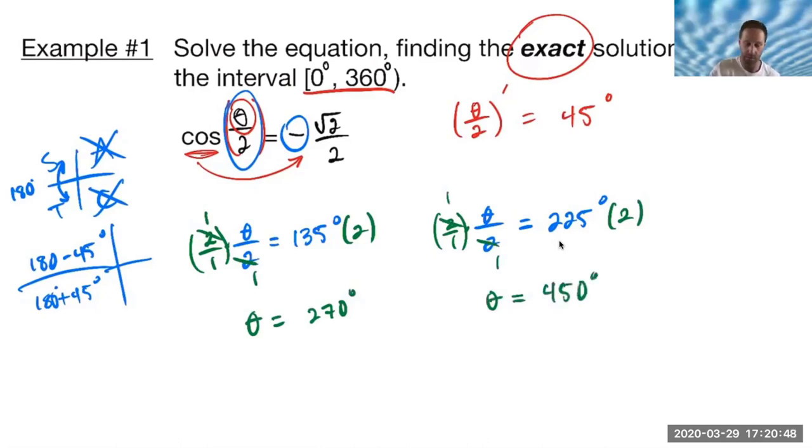But if you notice, remember from the beginning they asked us only for things between 0 and 360. Since 450 is not, we will only have one answer instead of the normal 2 that we would have if it was just cosine theta. So the process is very similar to what we've done in the past. But even though we have a multiple in there, it will play a little bit differently.